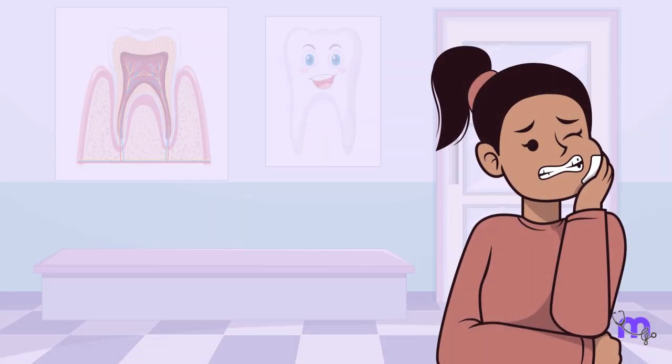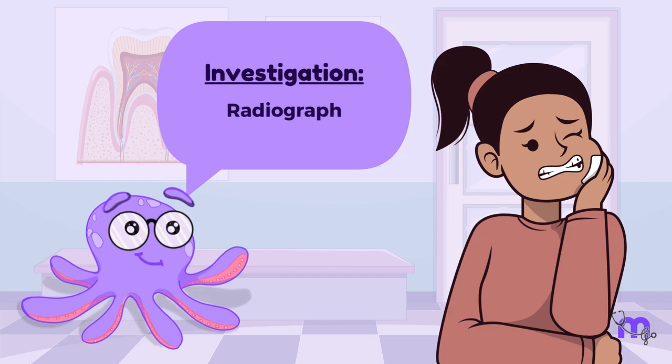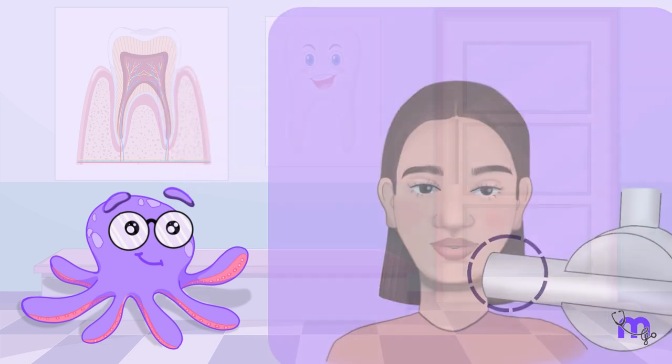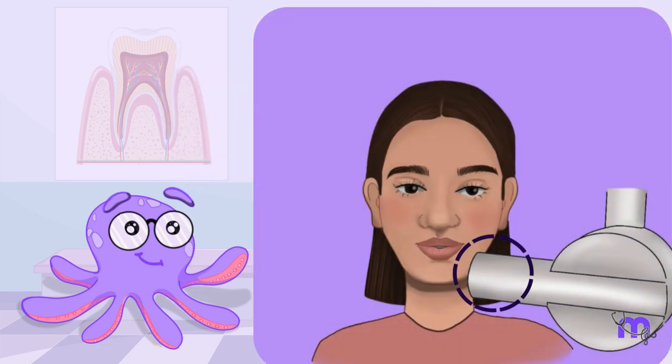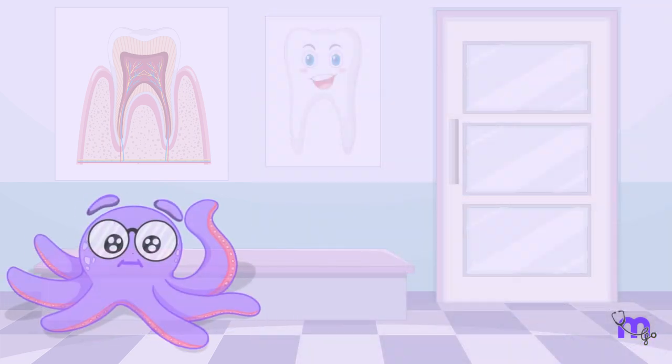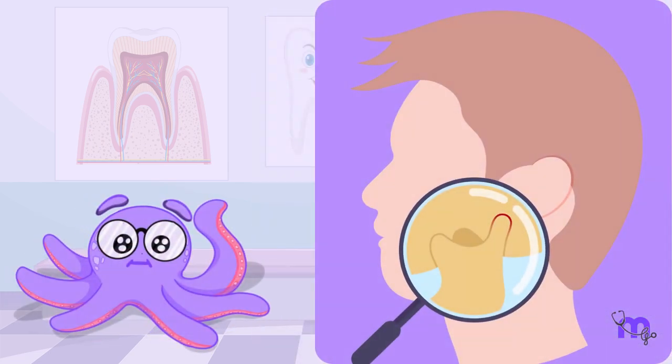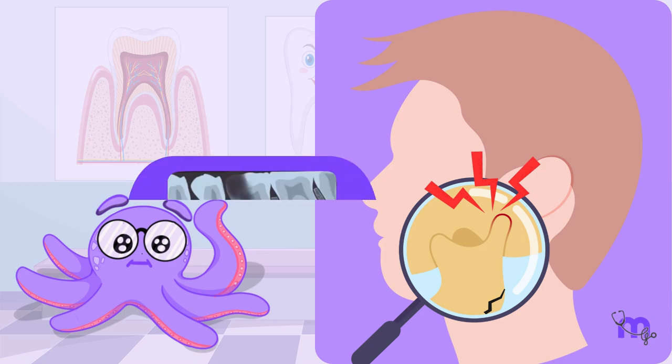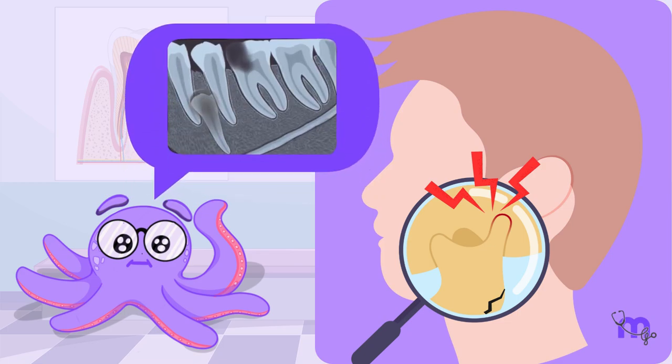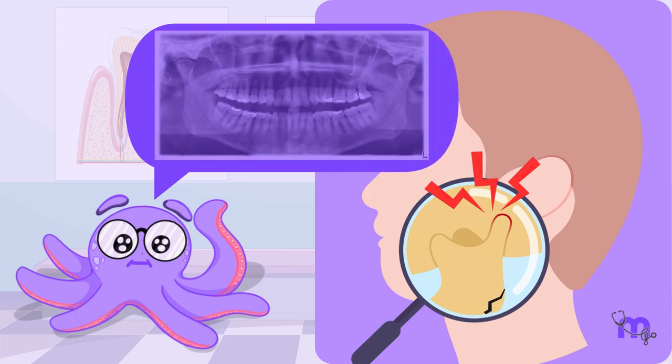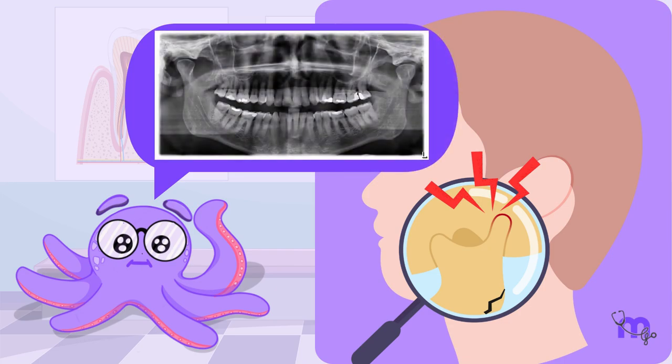When a patient comes to me with a toothache and a radiograph is required, I recommend an intraoral radiograph that covers the tooth in question. What do you think I would do if a patient came to me with temporomandibular joint pain or a fracture of the jaw? Will a small intraoral radiograph suffice? Certainly not, a larger extraoral radiograph that provides an image of a wider area is required.